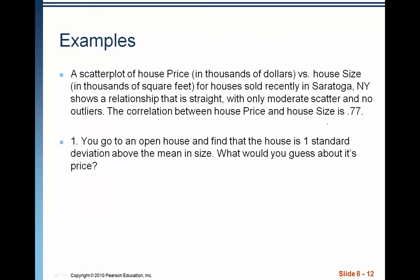So, let's do a couple of quick examples. A scatter plot of house price in thousands of dollars versus house size in thousands of square feet for houses sold recently in Saratoga, New York, shows a relationship that is straight with only moderate scatter and no outliers. The correlation between house price and house size is 0.77.